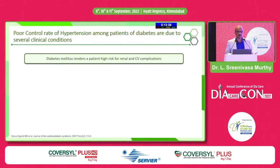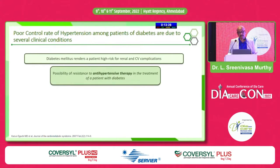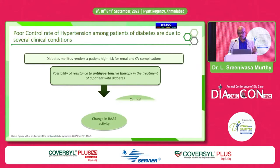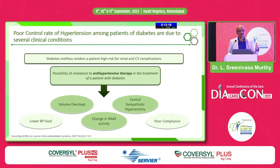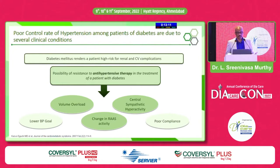Poor control of hypertension among diabetic patients is due to several clinical conditions: possibility of resistance to anti-hypertensive therapy due to changes in RAS activity, central sympathetic hyperactivity (as Indians we have slightly more sympathetic tone), volume overload, lower BP goal, and poor compliance — a major factor in busy practice. None of us consistently ask patients about timing or consistency of swallowing pills.